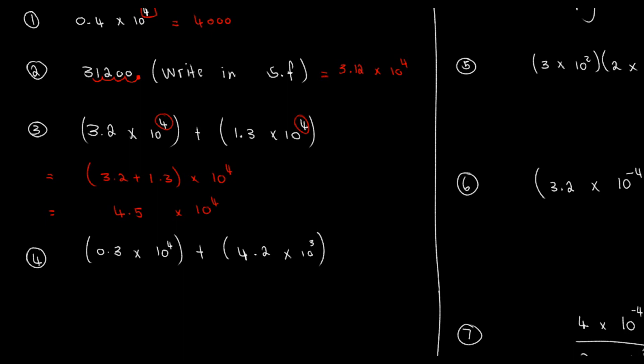Let's expand this to verify: 4.5 × 10⁴ means we move the decimal one, two, three, four places — adding zeros — giving us 45,000. So if I say 32,000 plus 13,000, I simply get 45,000. That's the mathematical proof that this method works.